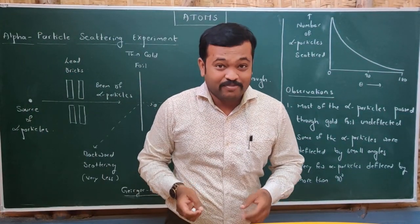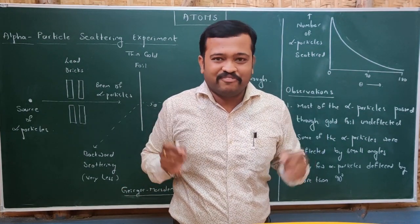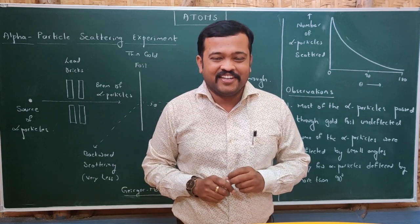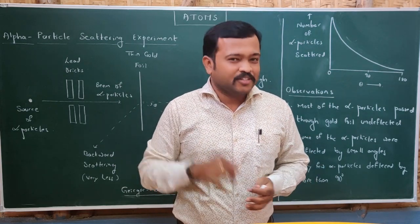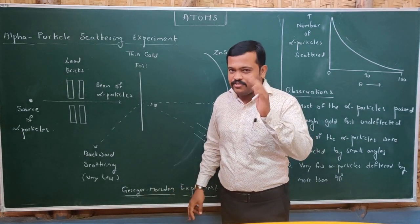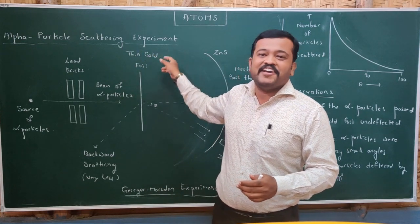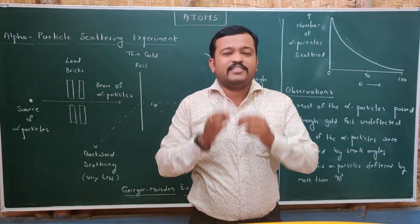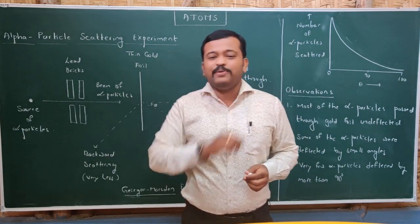Welcome to part one of the chapter on atoms. Everything in the universe is made up of atoms, so what is an atom made up of? That will be the session of today. There is an experiment performed by Geiger and Marsden under the guidance of Rutherford, and that experiment was Rutherford's alpha particle scattering experiment. They designed this experiment to find what is present inside an atom.